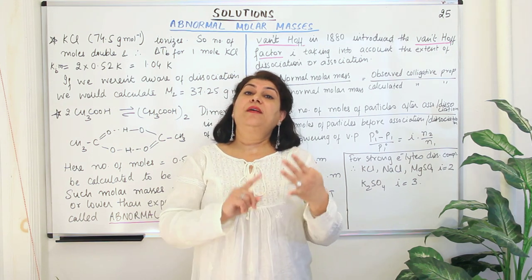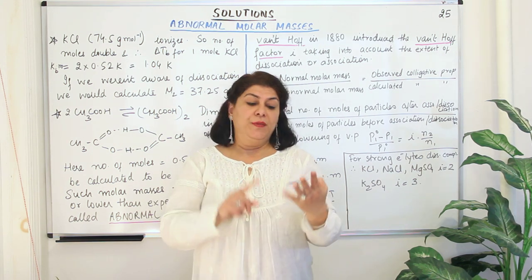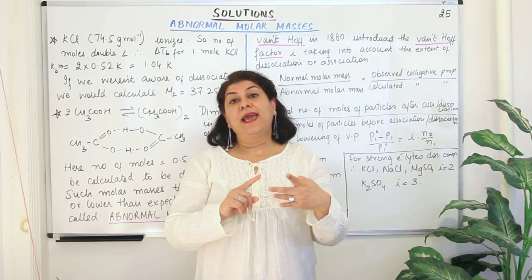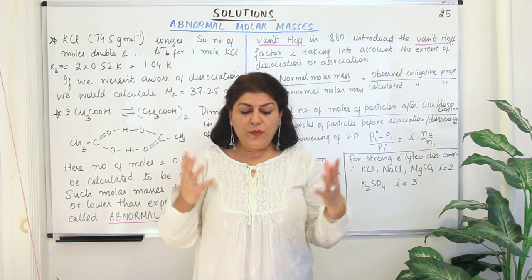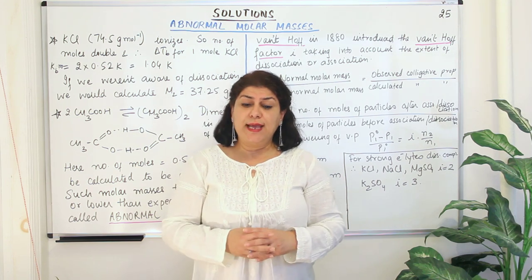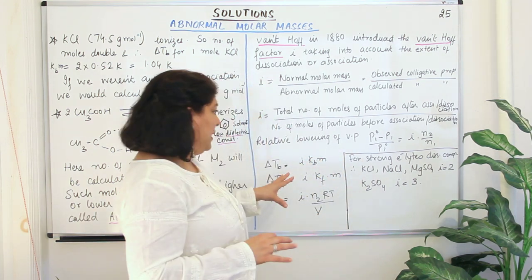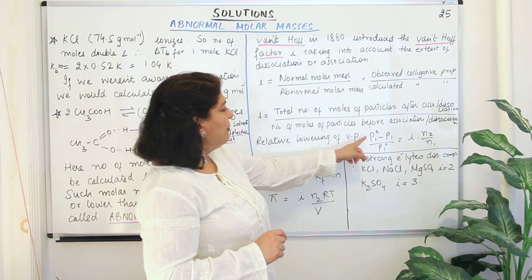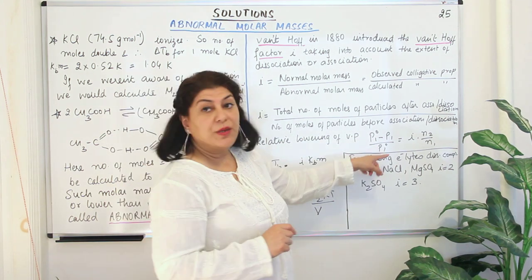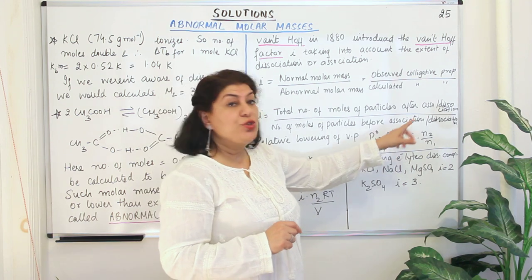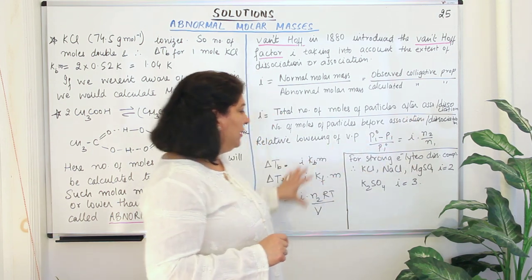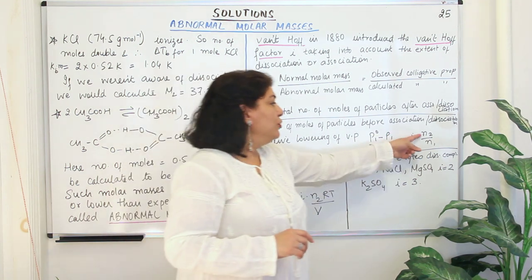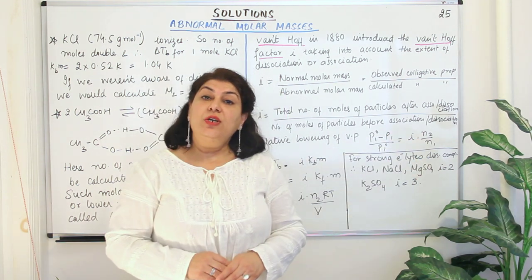These properties are: relative lowering of vapour pressure, elevation in boiling point, depression in freezing point, and osmotic pressure. We have studied all these properties. If you look at the formula, relative lowering of vapour pressure is (P1° − P1) / P1° = N2 / N1, that is number of moles of solute divided by number of moles of solvent.